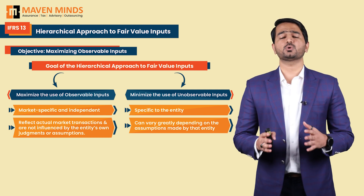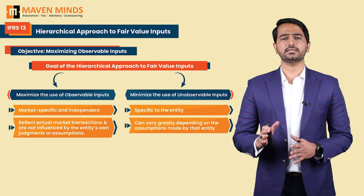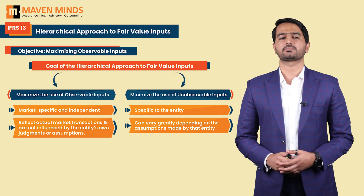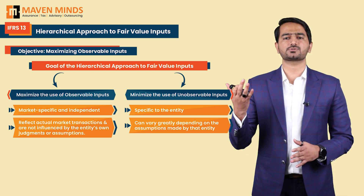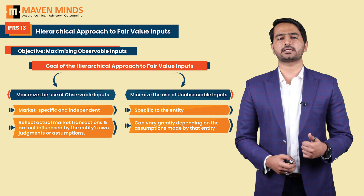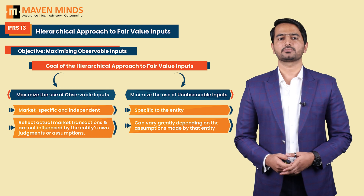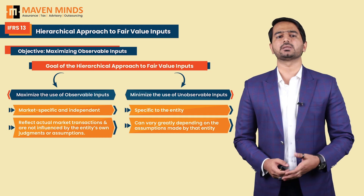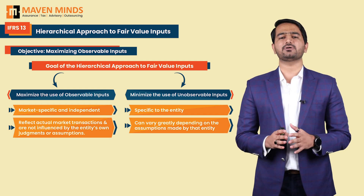With that, we have covered the core concepts of IFRS 13. Understanding this hierarchical approach is crucial for ensuring that your fair value calculations are grounded in reality and reflect the market as closely as possible. To sum up: the hierarchy is all about maximizing observable inputs. Start with Level 1 — quoted prices in active markets; if unavailable, move to Level 2 — adjusted quoted prices; and only if those are unavailable, rely on Level 3 — your own assumptions and models.